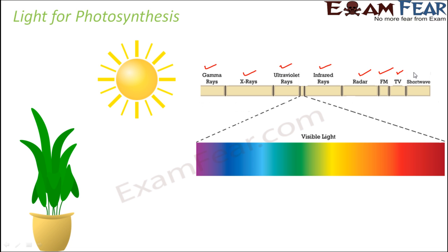The electromagnetic spectrum also includes radar, FM, TV, and shortwave. There are many types of waves present in the electromagnetic spectrum depending upon their wavelengths. But only the visible light portion of the electromagnetic spectrum is utilized for photosynthesis. In the process of photosynthesis, mostly the blue and the red light are absorbed — because the pigments involved in photosynthesis have the ability to absorb light of these particular wavelengths.